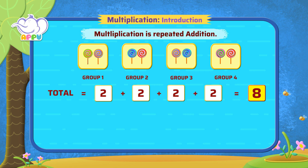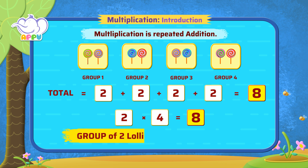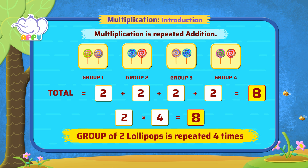An easier way to do this is to use multiplication using the multiplication symbol. We write two times four equals eight, because a group of two lollipops is repeated four times. Brilliant!